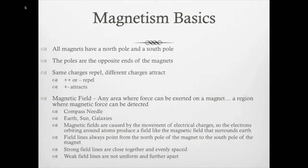Next we have Earth, Sun, and galaxies. So the Earth, the Sun, the Milky Way all have magnetic fields. And these magnetic fields are caused by the movement of electrical charges. So the electrons orbiting around atoms produce a field, like the field that surrounds the Earth and the Sun. Field lines always point from the north pole of the magnet to the south pole of the magnet. Strong field lines are close together and evenly spaced, whereas weak field lines are not uniform and are further apart.